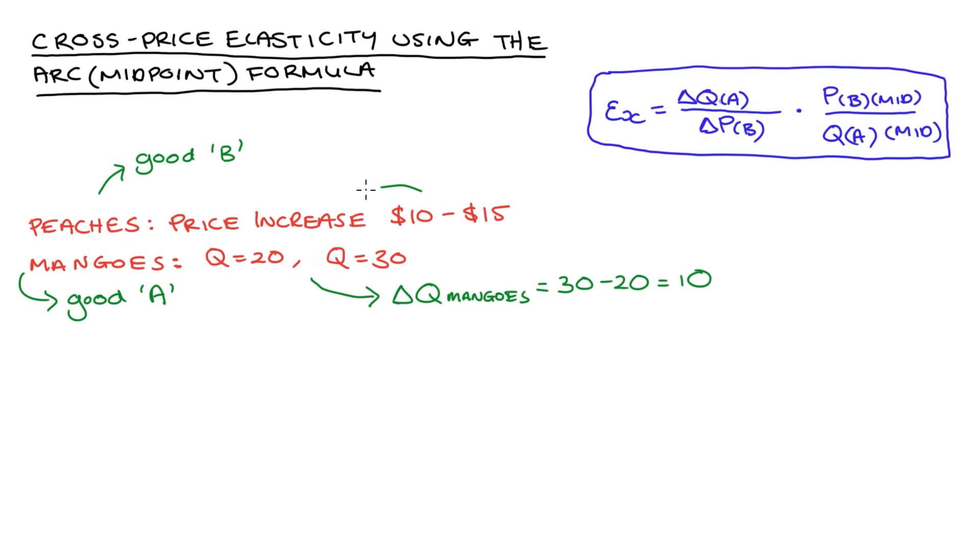The change in the price of good B, so that's the price of peaches, it goes from 10 to 15, so 15 minus 10 is 5.